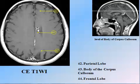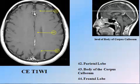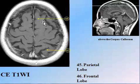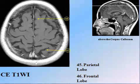At the level of the body of the corpus callosum, we identify the lateral ventricles, superior sagittal sinus, straight sinus, and the interhemispheric fissure. The frontal lobes are present on both sides, with no temporal lobes visible here. The occipital lobe is posterior, while the thalamus is on either side of the third ventricle.